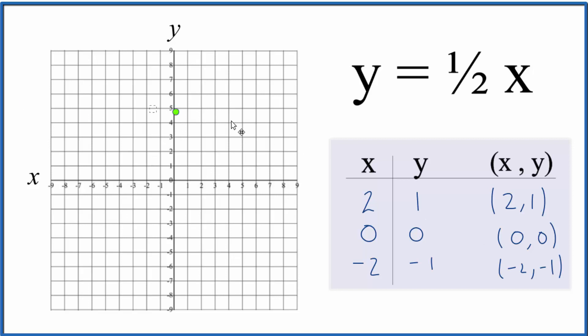So let's graph it. We have x is 2, 1, 2, and y is 1. We have x is 0, y is 0, and then we have x is negative 2, and y is negative 1.